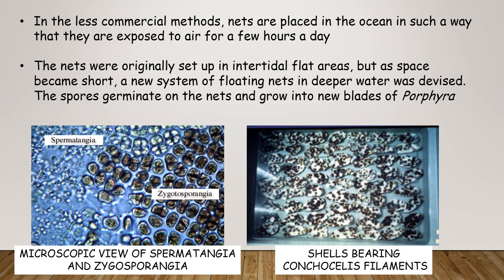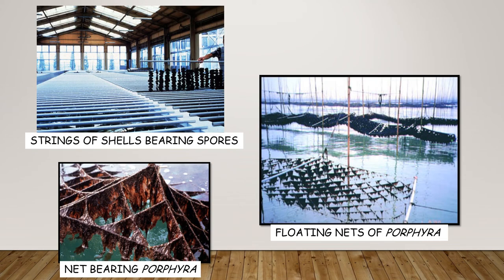This is the picture of spermatangia and zygosporangia. The second picture shows shells bearing conchocelis filaments. This is the picture of strings of shells bearing spores, nets bearing Porphyra, and floating nets of Porphyra.